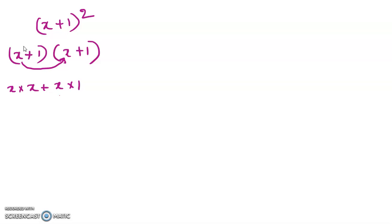Now we will multiply 1 with each term. We multiplied these two terms first with x. Now we multiply with 1: 1 times x, and 1 times 1.